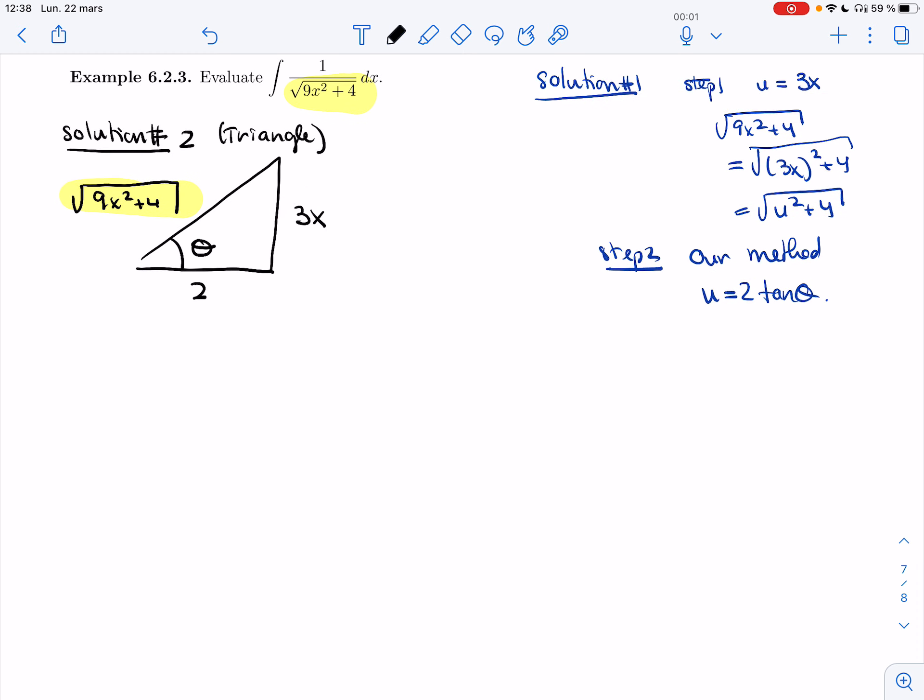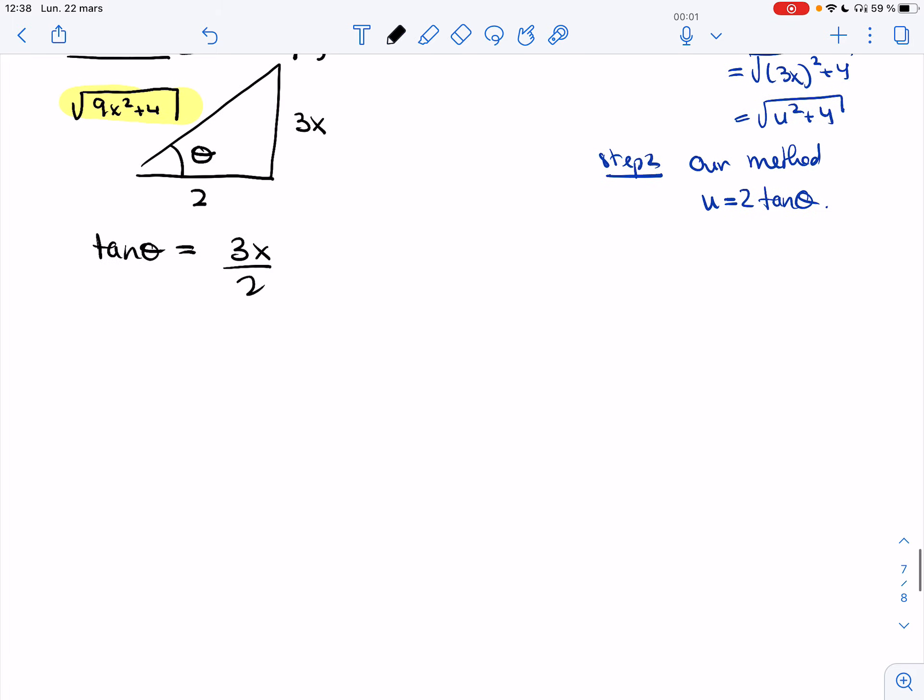Note that it's the same one as there. And so I get that tan theta is 3x over 2 opposite over adjacent. And so I'm going to replace, I'm going to use this identity to replace it. I'm going to assume that 3x is 2 tan theta.